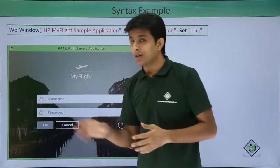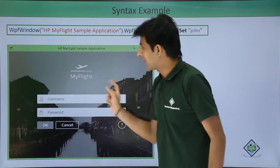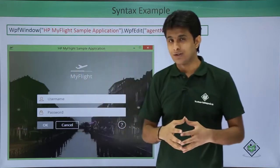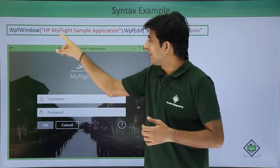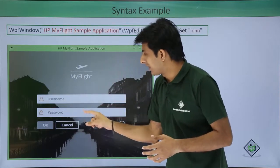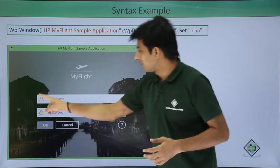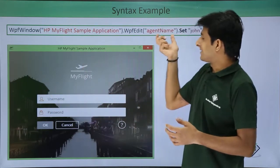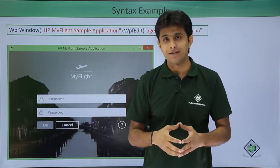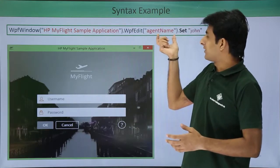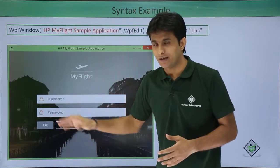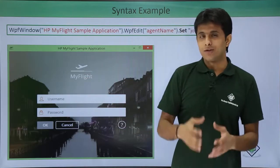When you record the script for the first time, it gets recorded as WPF window — Windows Presentation Foundation window — that's the class. The name of the parent object in double quotes is 'HP My Flight Sample Application'. That parent object has multiple child objects. Dot WPF edit — this is the WPF edit object — given as agent name; the dev name at the back end is 'agent name'. Dot set is the operation performed on this object.